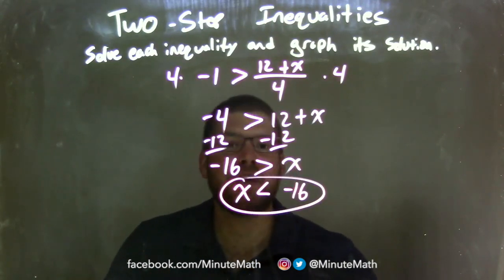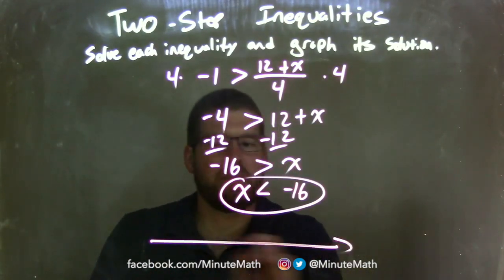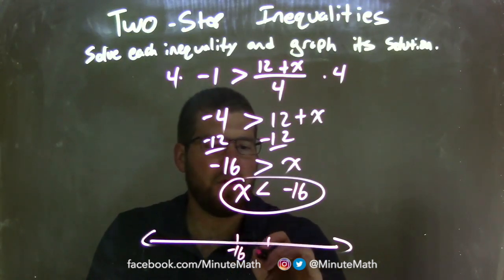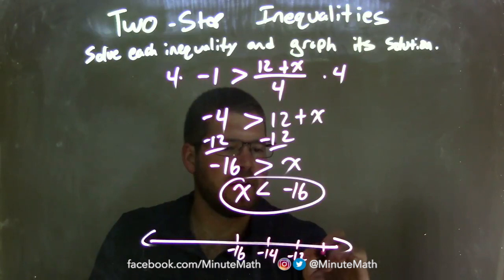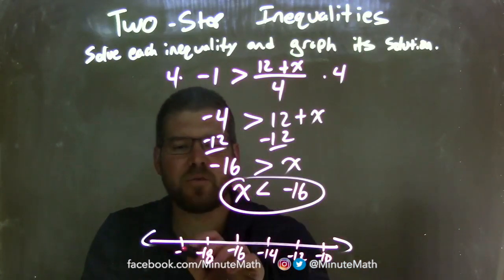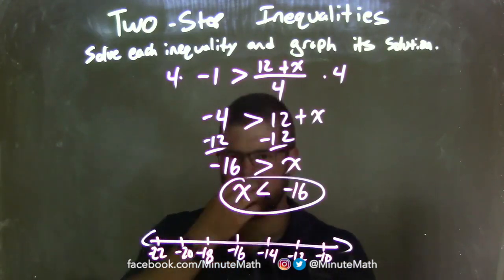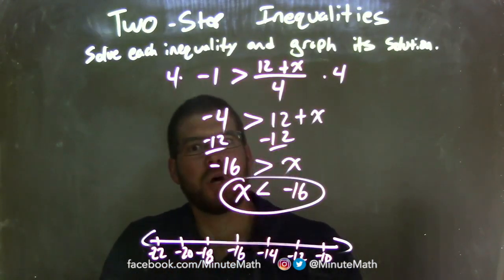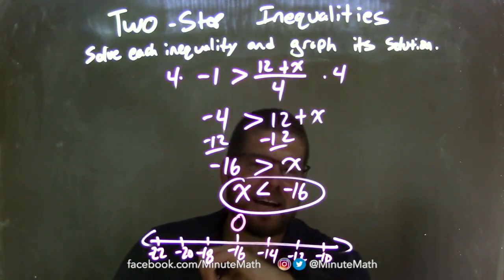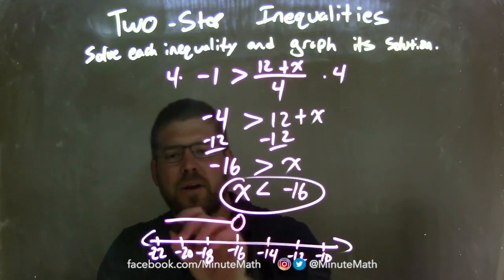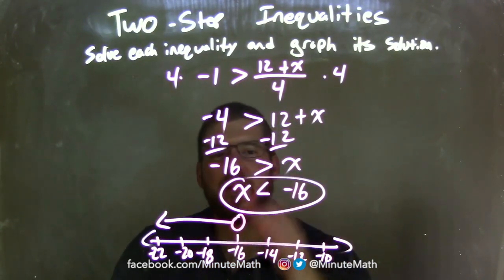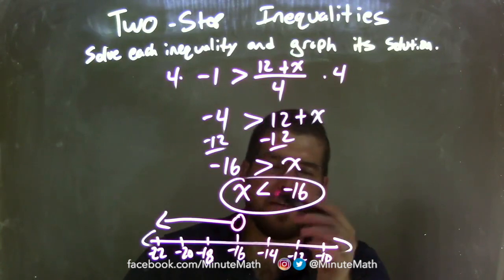x is by itself, so now we need to graph it. My number line: negative 16 right in the middle, going by 2s — negative 14, negative 12, negative 10, and negative 18, negative 20, negative 22. Since x is not equal to negative 16, we have an open circle at negative 16. Since x is less than negative 16, we put an arrow to the left. Our graph now matches our final answer of x is less than negative 16.